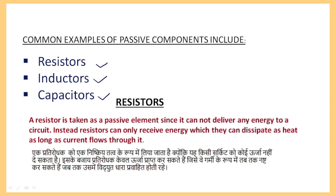The resistor is taken as a passive element since it cannot deliver any energy to a circuit. A resistor can only receive energy, which it dissipates as heat, as long as current flows through it. So when current flows through a resistor, heat is generated — the energy is absorbed and lost as heat. So this absorbing element means it is a passive element.